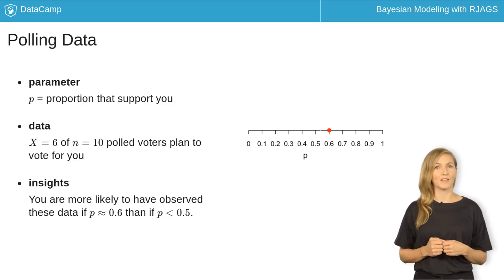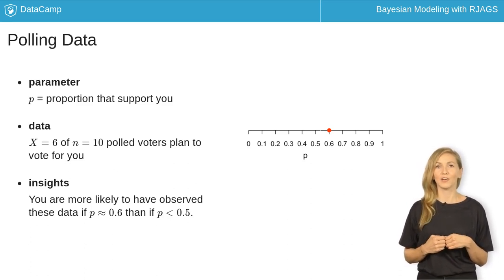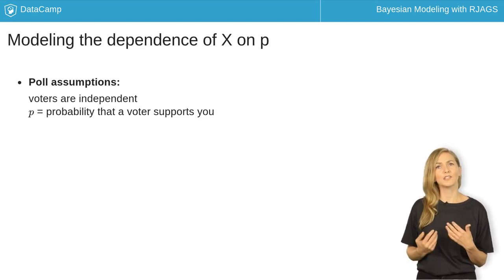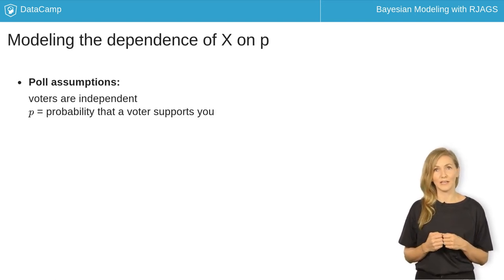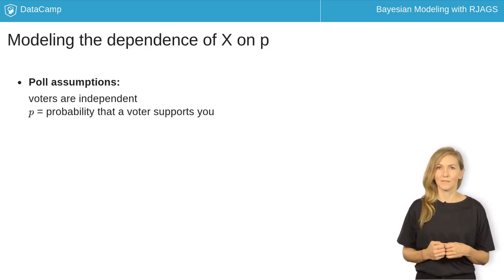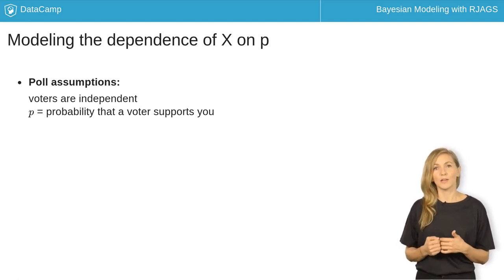Of course, to rigorously quantify the likelihood of the poll results under different election scenarios, we must understand how polling data x depend on your underlying support p. To this end, you can make two reasonable assumptions about the polling data. First, voters respond independently of one another. Second, the probability that any given voter supports you is p, your underlying support in the population.